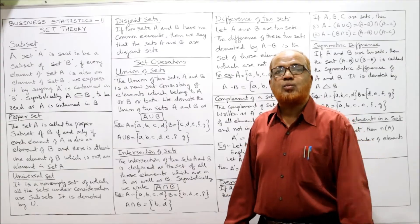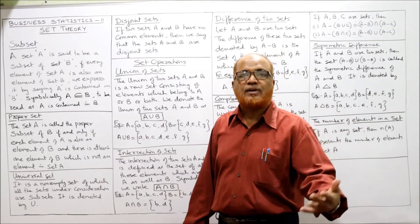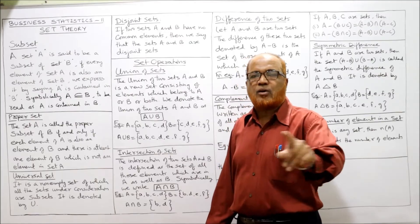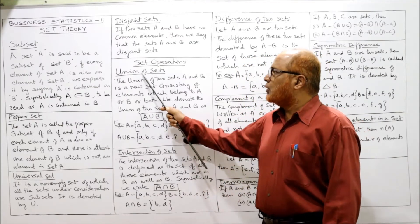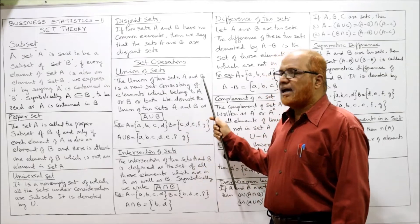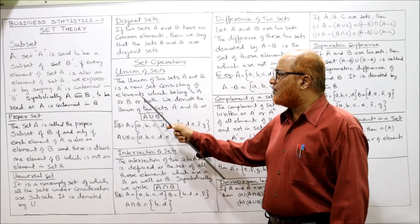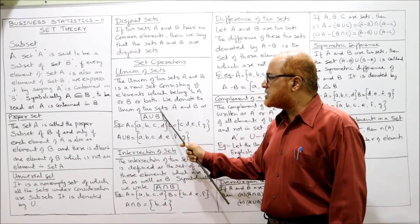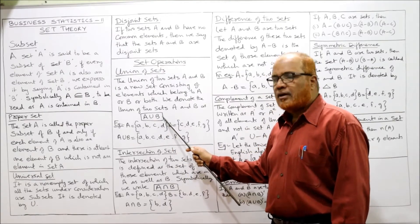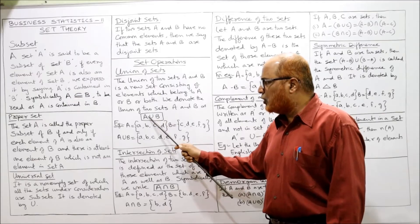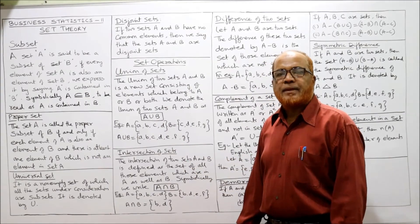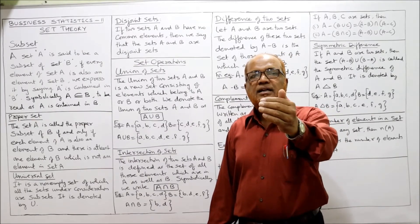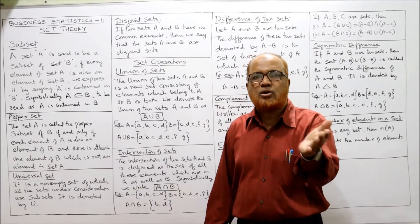Now set operations. The first operation is union of sets. The union of two sets A and B is a new set consisting of elements which belong to A or B or both. We denote the union of sets A and B as A union B, where the symbol U stands for union.